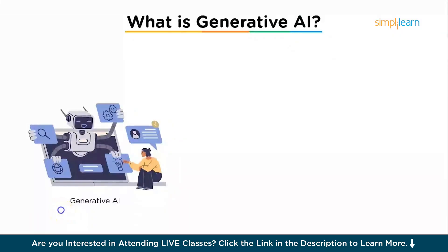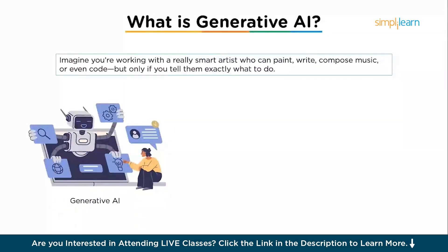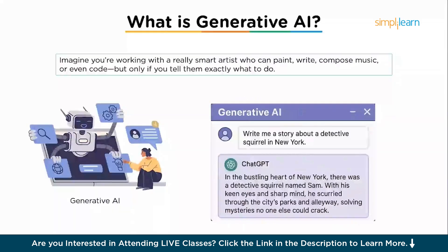First, let's understand what generative AI is. Imagine you're working with a really smart artist who can paint, write, compose music or even code for you — but only if you tell them exactly what to do. That's generative AI. It waits for your input. You type a prompt like 'write me a story about a detective squirrel in New York' and boom, it writes it. Why? Because it's trained on huge datasets and uses patterns it has learned to generate new content — text, images, music or even videos.